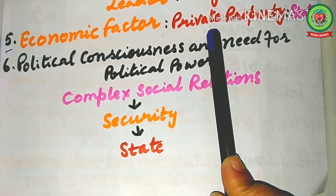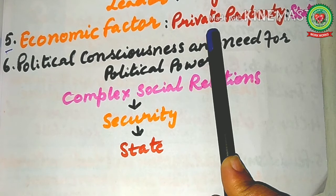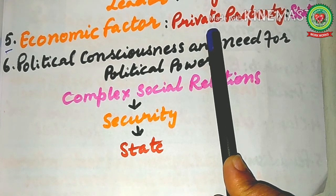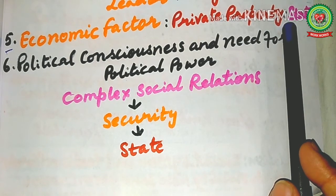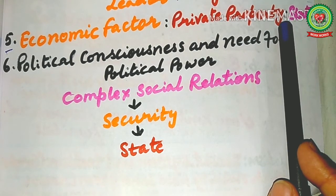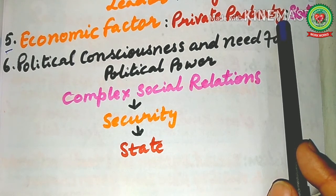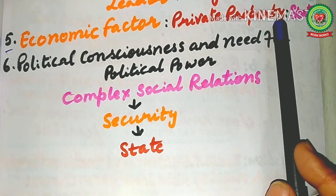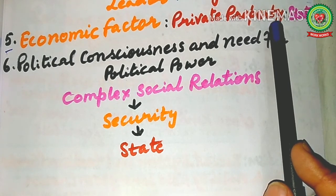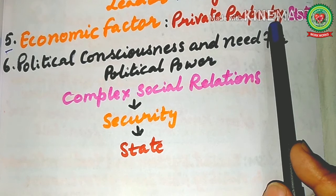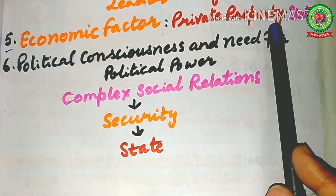Later the social relations became very complex, so the need was felt for an organized authority capable of protecting life, property, and social relations. This created the environment in favor of the emergence of the state. Even today it is one of the major responsibilities of the government to provide protection to the life and property of the people and maintain law and order, as seen during the Corona lockdown.